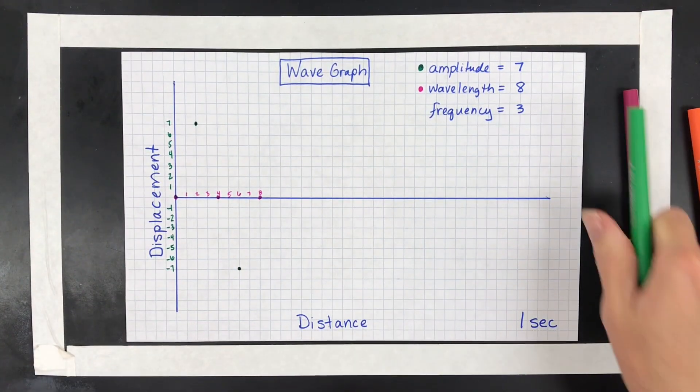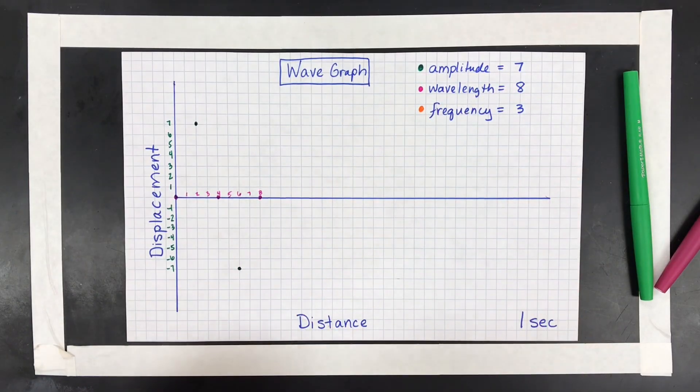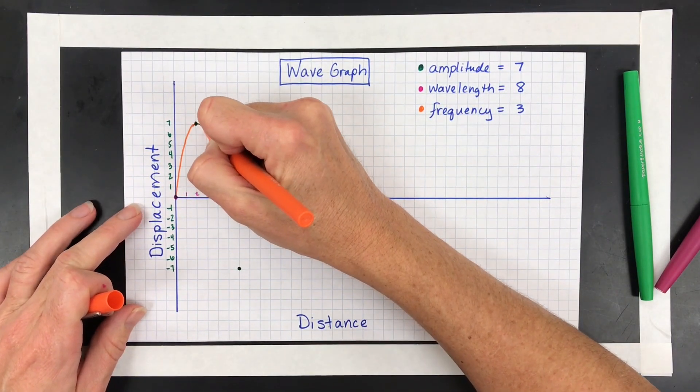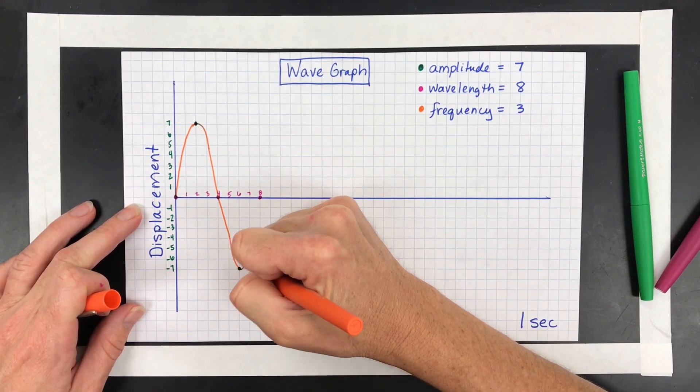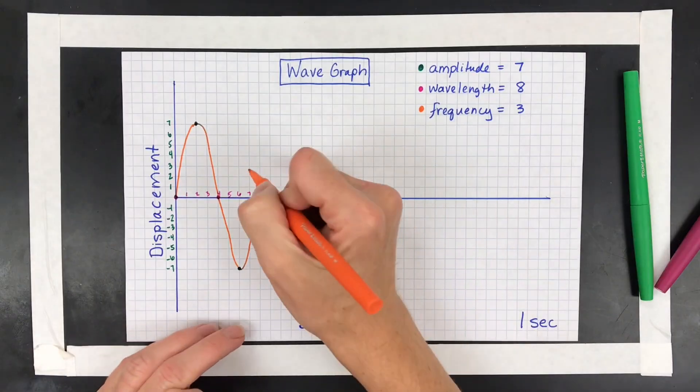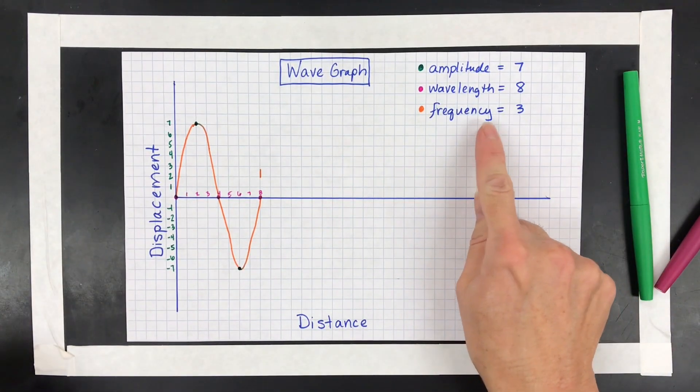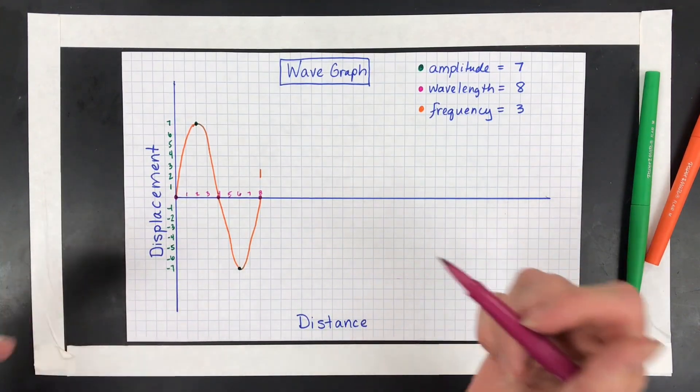And then what we want to do is, I'm going to do orange for frequency. We want to make this be one cycle. Sometimes it's called a period too, but we'll just call it a cycle, make it easy. So there's 1. So that would be a frequency of 1 in this 1 second. But it's a frequency of 3. So what I need to do is I need to graph this 2 more times.